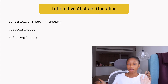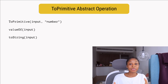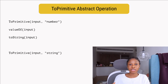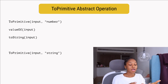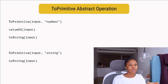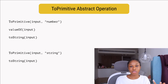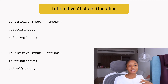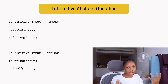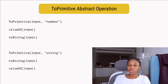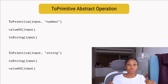If the string hint is sent, the order is reversed compared to the number algorithm. ToPrimitive calls the toString method first. If it gets a string representation, it uses it. If it doesn't, it will try the valueOf method to see if the object has any primitive value associated with it. If it still doesn't get a primitive, it results in a TypeError.